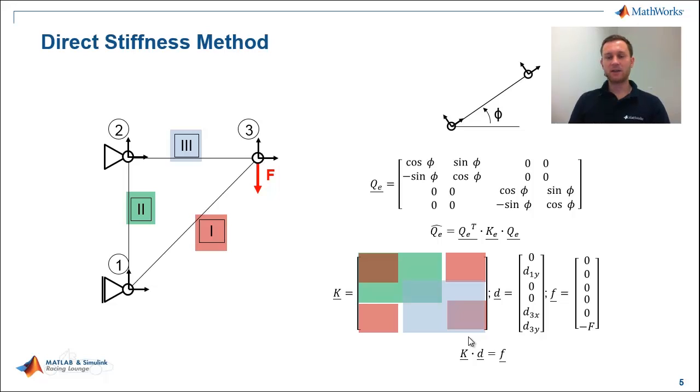Depending on the ID matrix, the truss stiffness matrix or the element stiffness matrices become a certain place in the global system matrix. Just putting the truss stiffness matrix depending on their degrees of freedom and the IDs of the degree of freedom to the right position. So then we have already assembled the stiffness matrix.